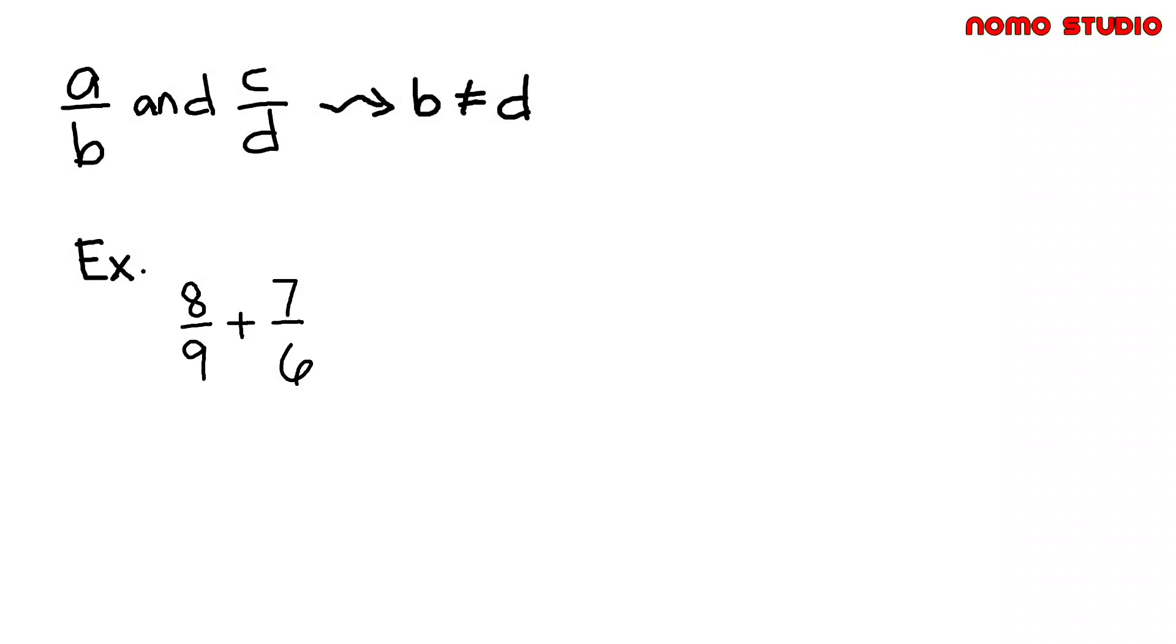We have here an example: 8 over 9 plus 7 over 6. As you can see, the two fractions have denominators that are not equal. First, let's make them equal.